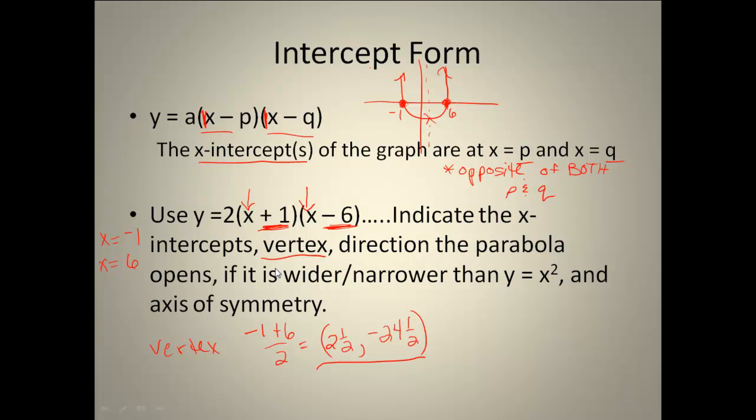Okay, next, the direction the parabola opens. Our 2 is positive, so it's going to open up. It wants to know if it's wider or narrower. So now I need to compare the 1 to the 2. Well, the absolute value of the 2 is bigger than a 1, so that means it is going to be narrower. And it finally wants to know what is my axis of symmetry. Just like with the other forms, our axis of symmetry goes right through that vertex. So when I found my vertex, I also have my value for my axis of symmetry. So x is equal to 2 and a half. It will always match the x-coordinate of your vertex.